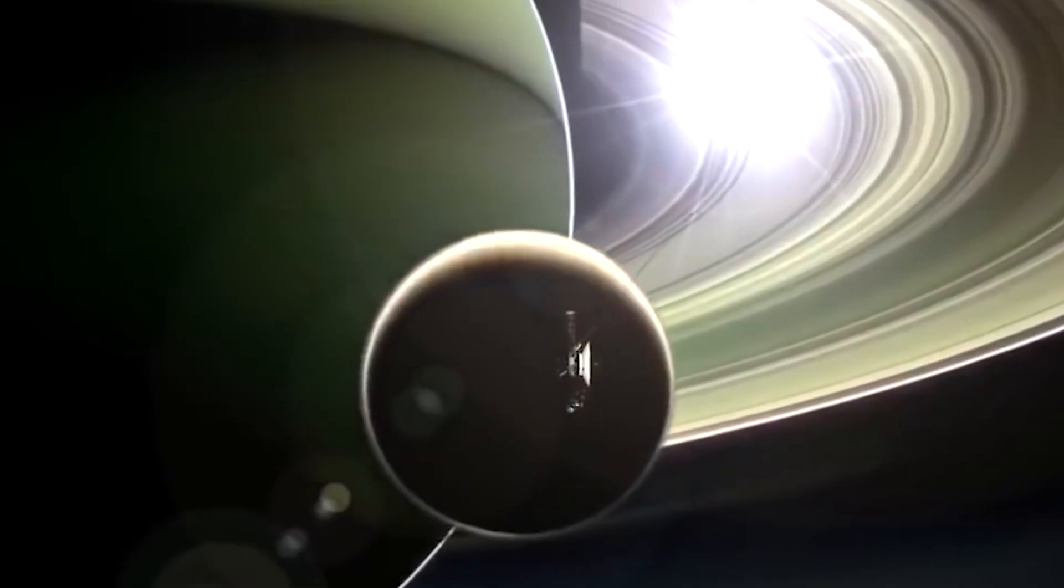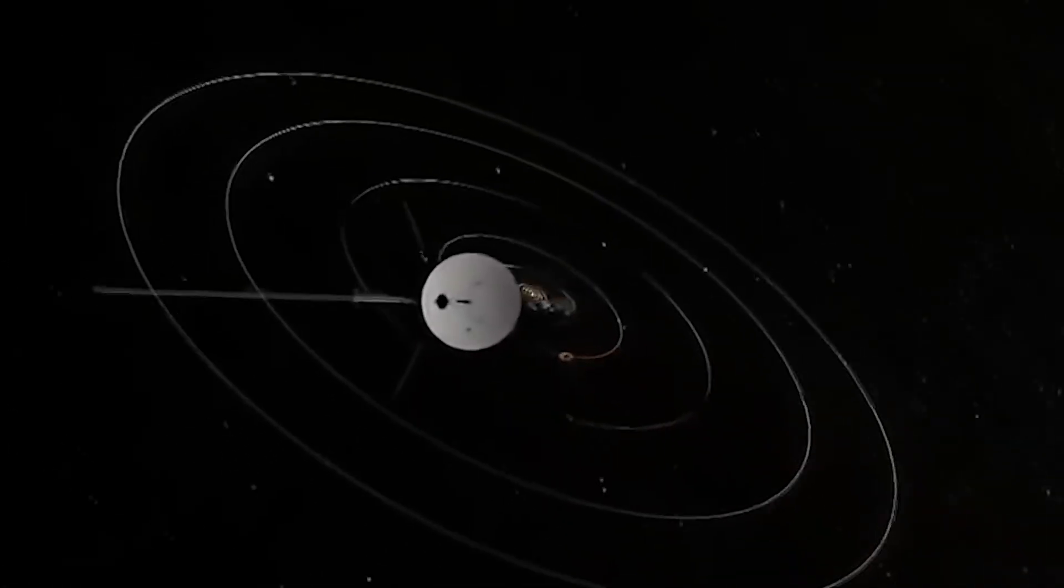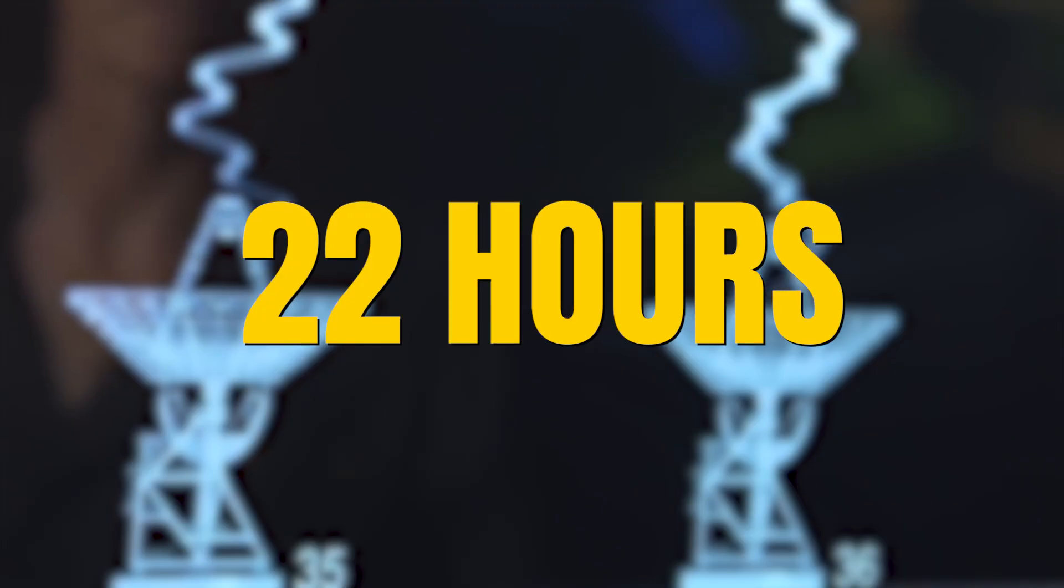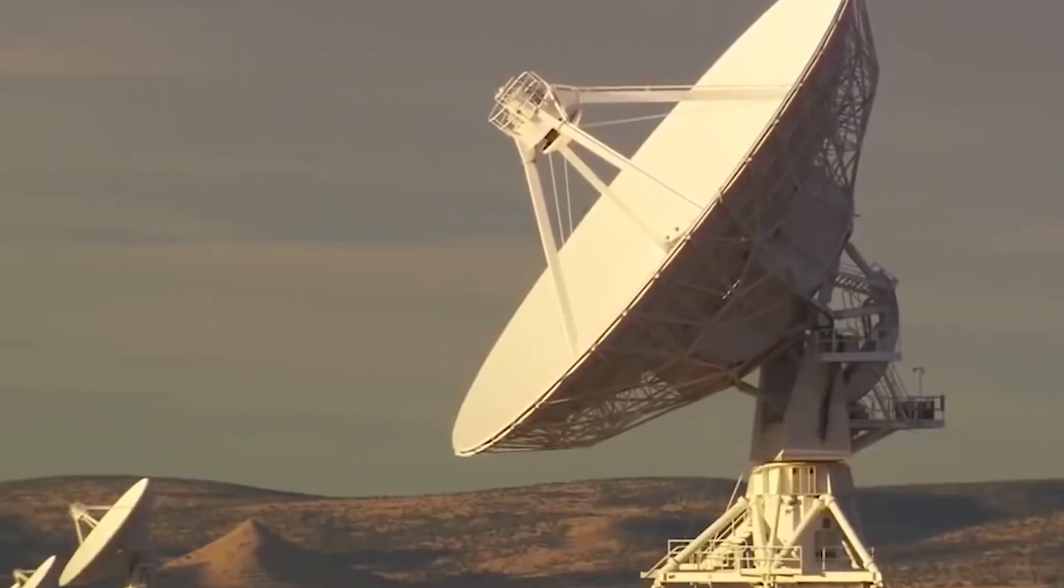Since then, both Voyagers have been traveling through interstellar space. Voyager 1 is now over 15 billion miles from Earth. Its signal takes over 22 hours to reach us. For decades, scientists looked for what they expected to find. Until now.